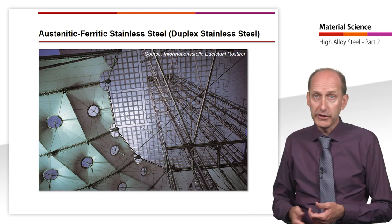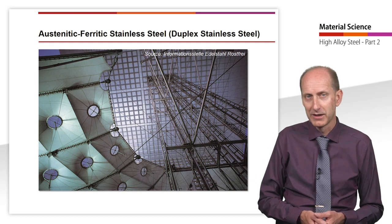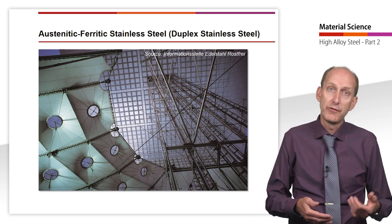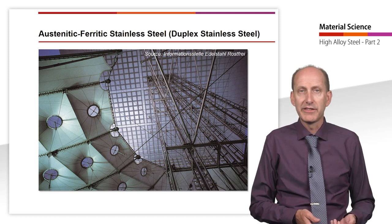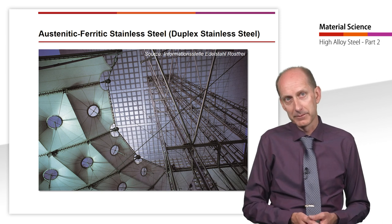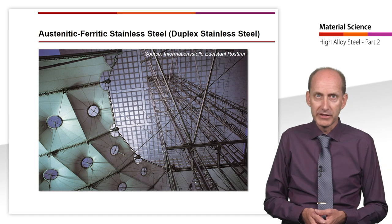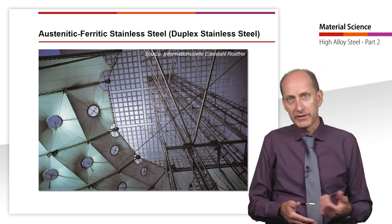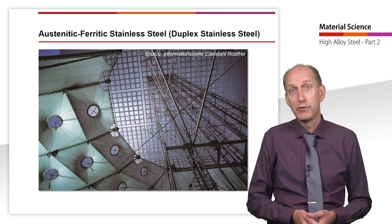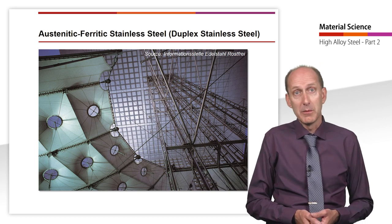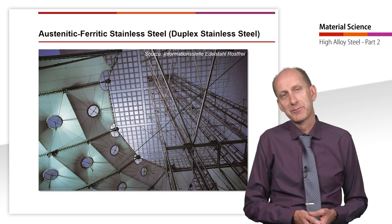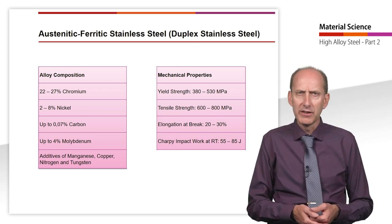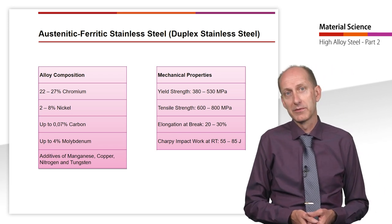Stainless steel with austenitic-ferritic microstructure is often called duplex stainless steel. Earlier problems in welding processing are now solved by adding nitrogen. The main advantage of ferritic-austenitic steel over austenitic steel is that the 0.2% yield strength is at least twice as high. This helps users of pressure vessels by reducing wall thickness or brings significant cost advantages in transport containers through weight savings. It also gives rise to interesting applications for the construction industry, such as elevator towers made of duplex steel tubes.